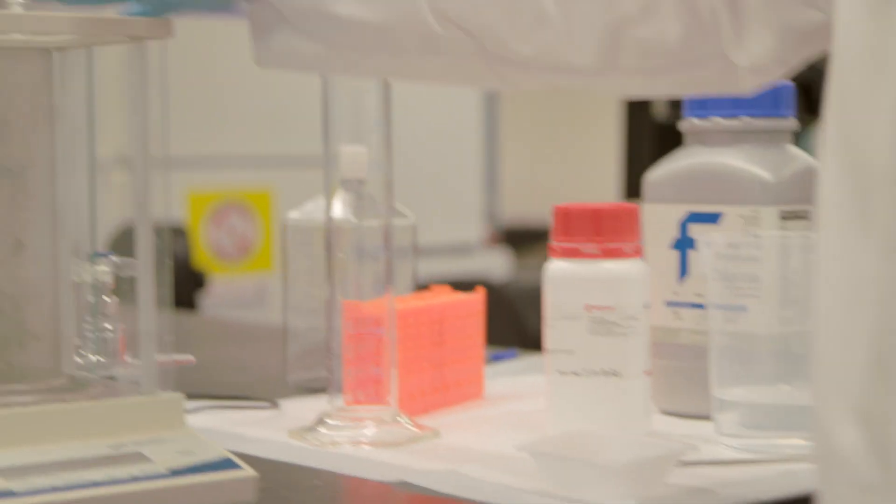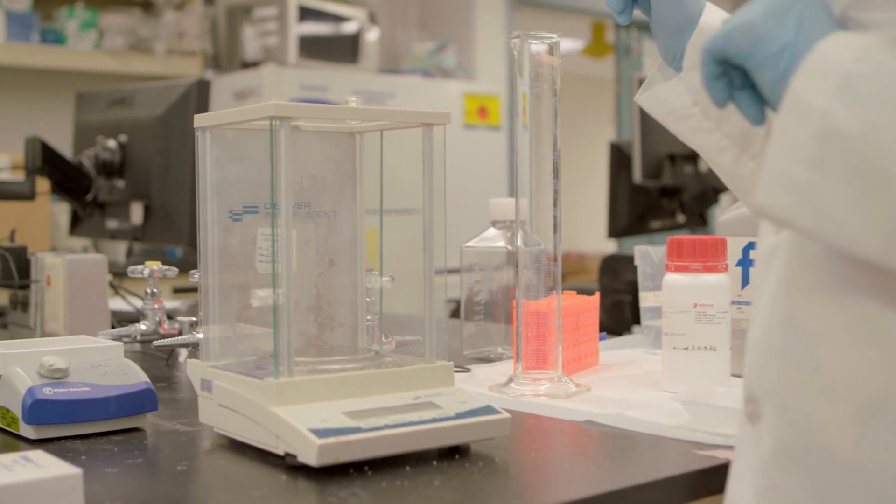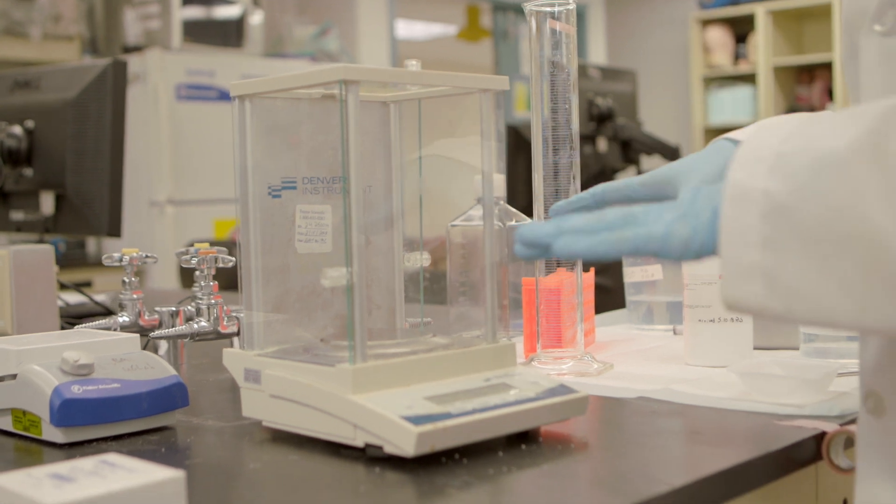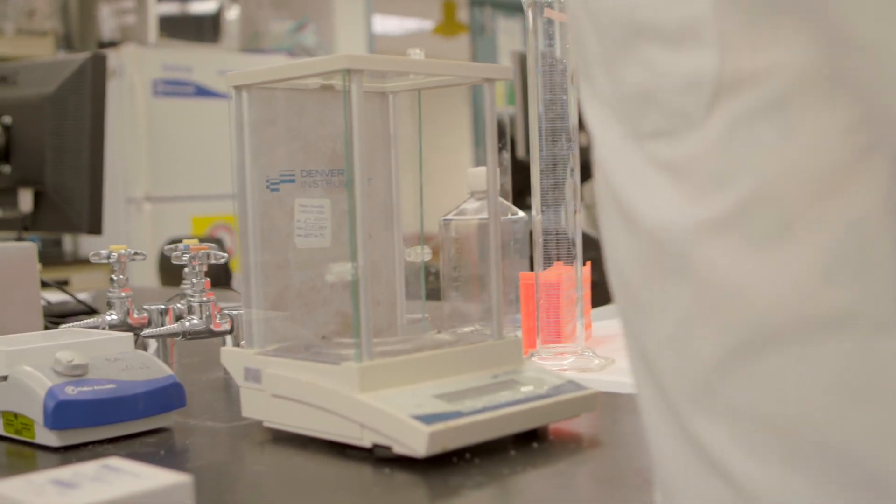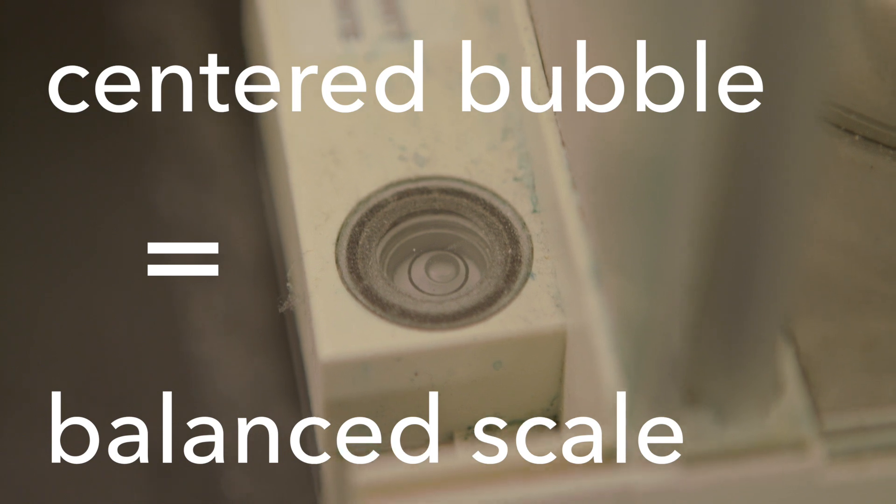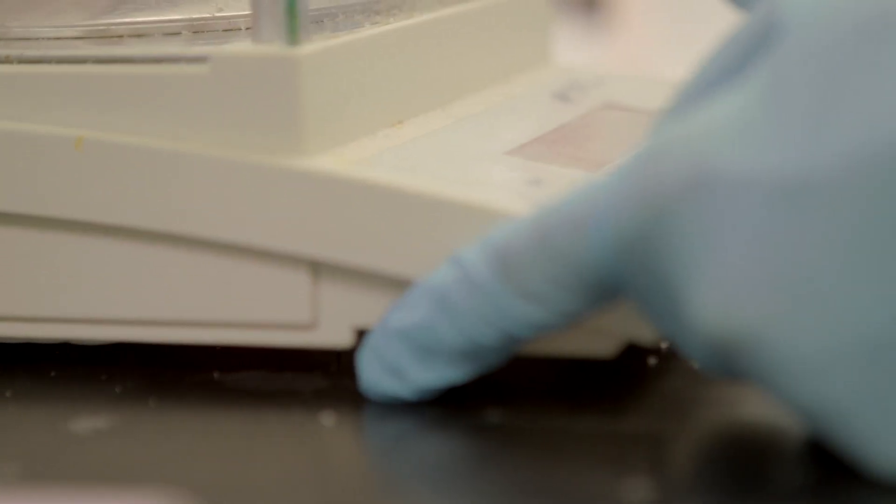Here is our scale that we're going to measure. The first thing I always do when I come up to one of these is check to make sure that it's actually balanced. All scales in some location will have a level on them, and this one happens to be on the back. You want to make sure that the bubble is centered in the circle, and then you know your scale is balanced. If it's not, I can adjust it. The adjustment on these scales is usually two feet that move, so moving them forward or back will adjust the location of that bubble.